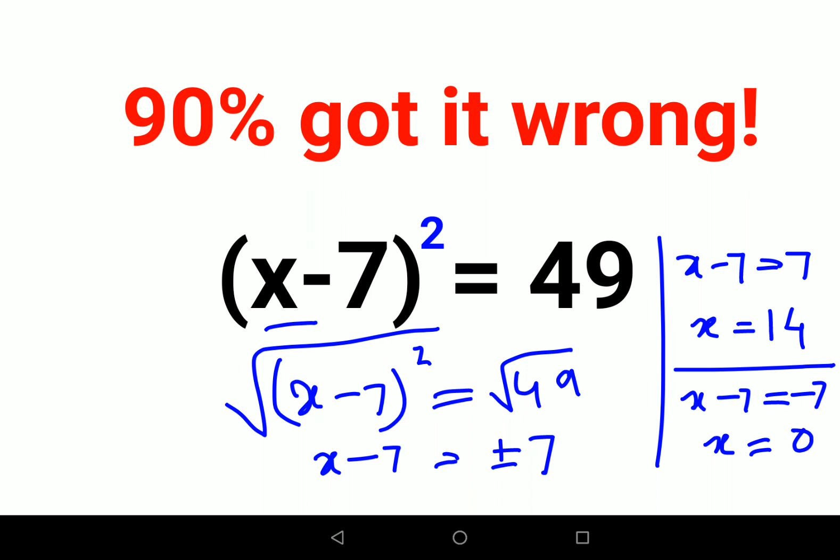Now let's verify these values. If we put x as 0, then (0 - 7)² equals (-7)², which equals 49. That is correct.